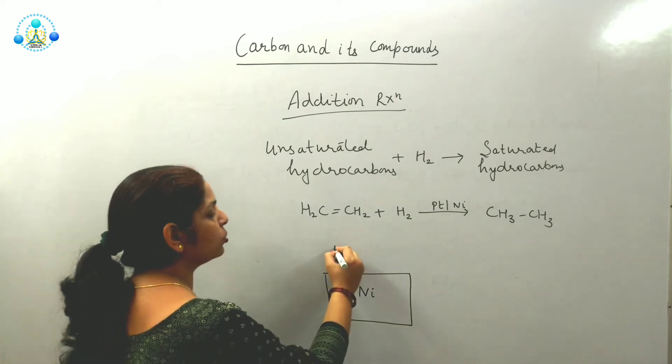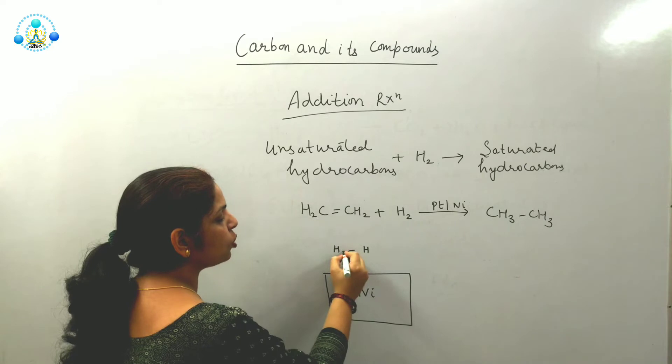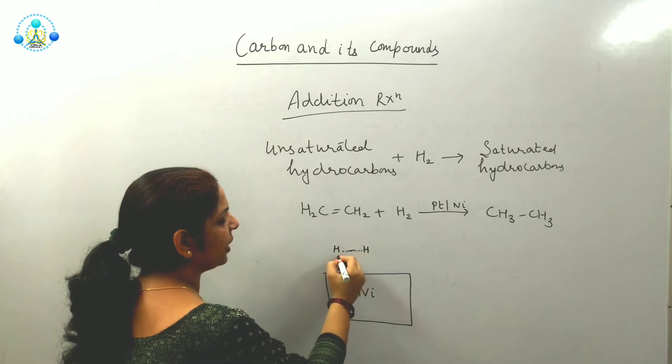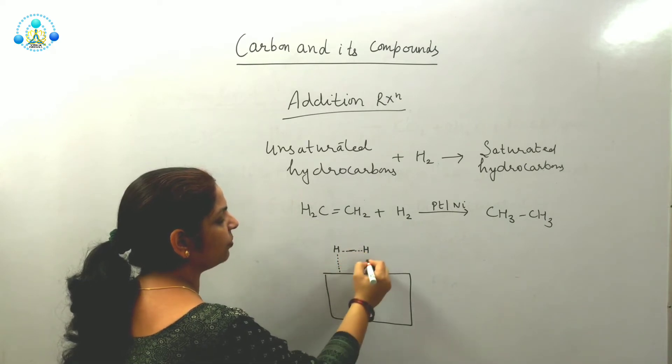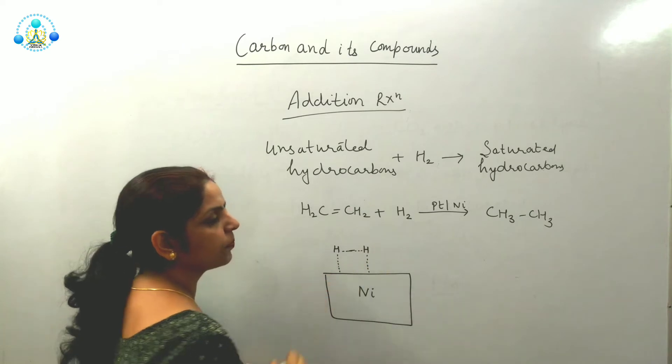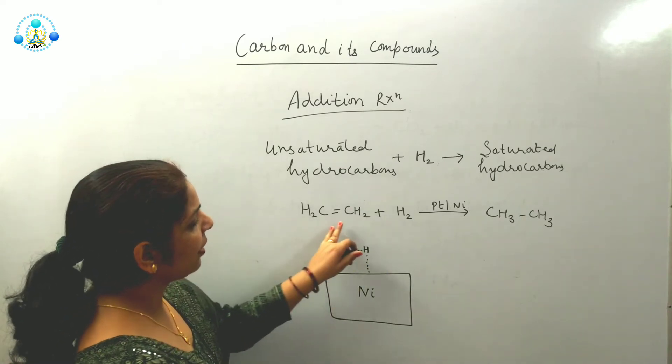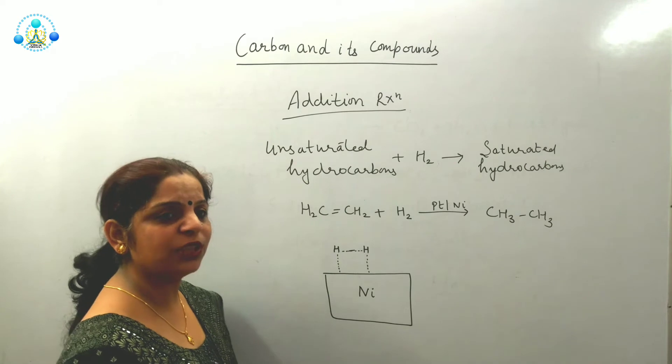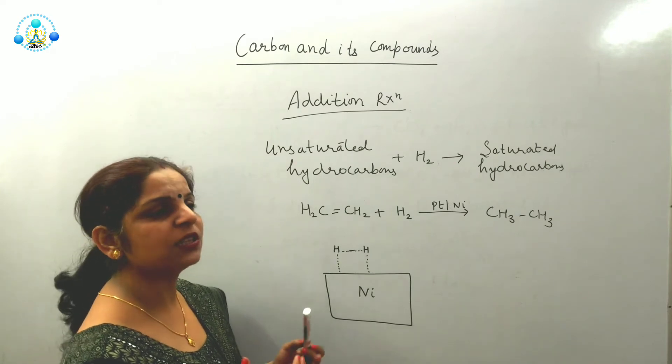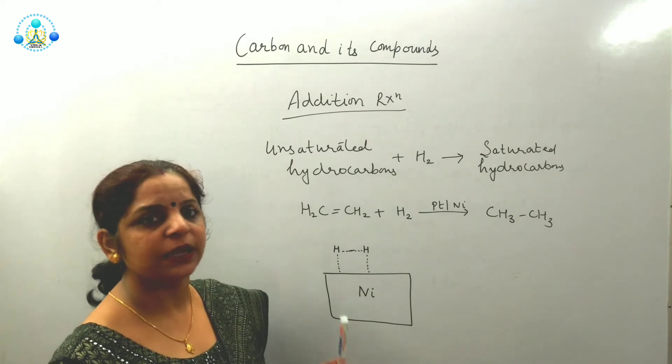First of all, hydrogen gas is coming here. Its sigma bond will start breaking and it will start making bond with the surface. It is like we are having two gases. If gases are colliding with each other in air, their collision will be elastic collision, resulting nothing.